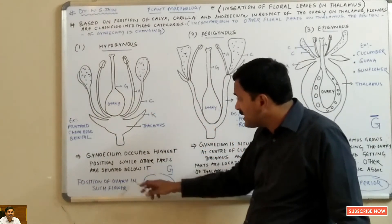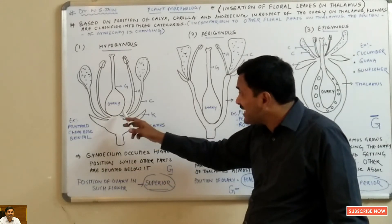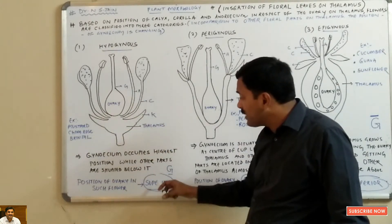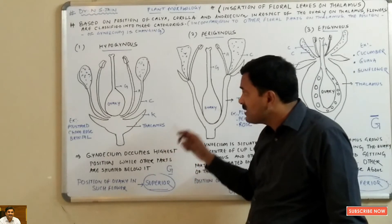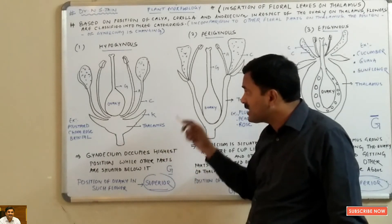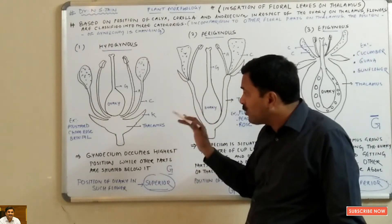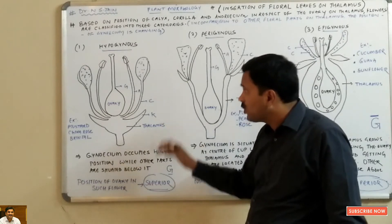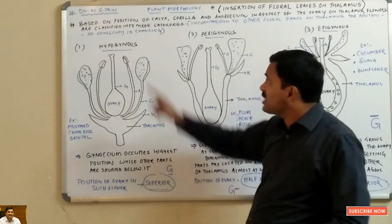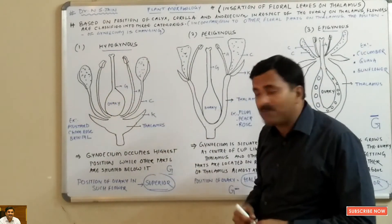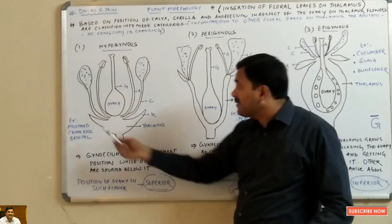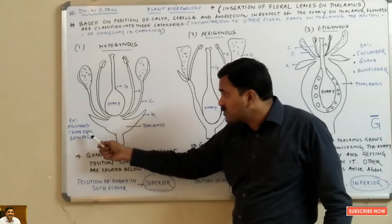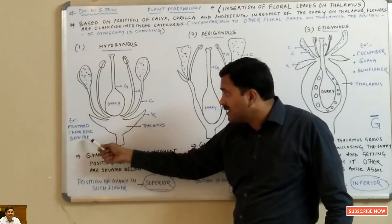In a hypogynous flower, the position of the ovary is topmost — the ovary is superior. It is present at the top position and all the floral parts arise from the base of the ovary. This type of hypogynous flower is present in mustard, china rose, and brinjal.